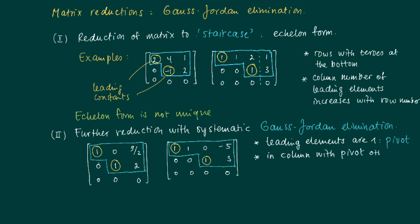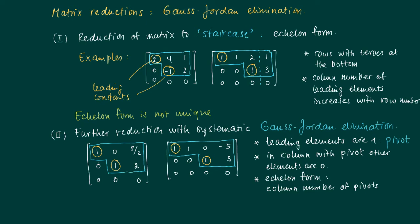The leading elements are one and they are called pivots. Secondly, in the column with the pivot, all other entries are zero. Thirdly, we have an echelon form — a staircase form — meaning the column number of the pivots increases with the row number. This characterizes the specific reduced row echelon form.